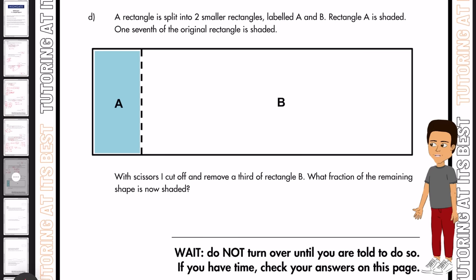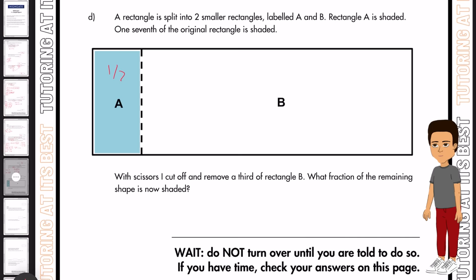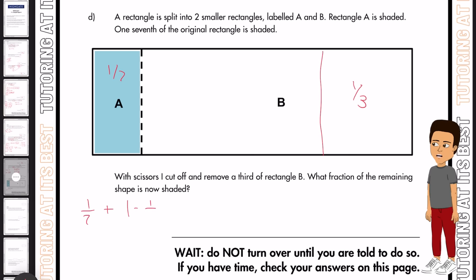Part D. A rectangle is split into two smaller rectangles labeled A and B. Rectangle A is shaded. One seventh of the original rectangle is shaded. So we know that's one seventh. With scissors, I cut off and remove a third of rectangle B. What fraction of the remaining shape is now shaded? Well, in order to get the remaining, we're simply going to have one seventh plus one minus one seventh, and we're going to multiply this by one minus a third.